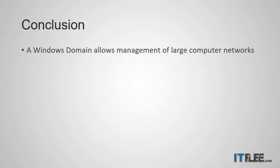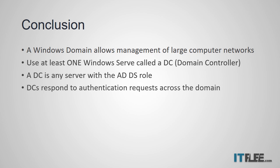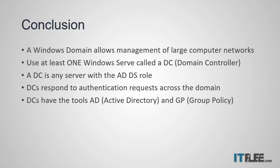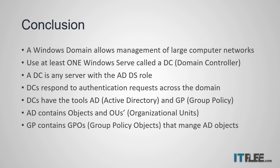To recap: a Windows domain allows management of small or large computer networks. They use a Windows Server called a DC or domain controller. A DC is any server that has the Active Directory Domain Services role installed. DCs respond to authentication requests across the domain, and have the tools Active Directory and Group Policy. Active Directory contains objects and OUs. Group Policy contains GPOs and manages settings for AD objects.